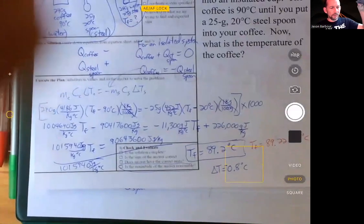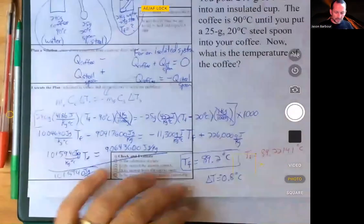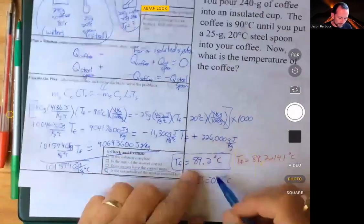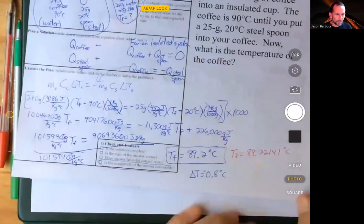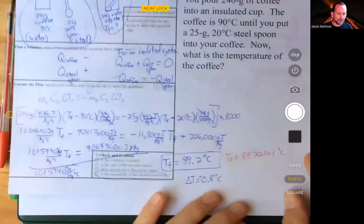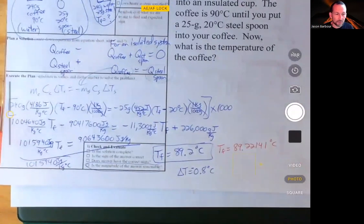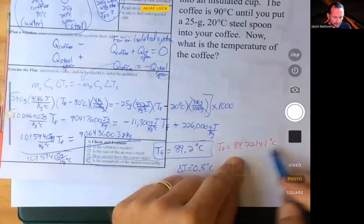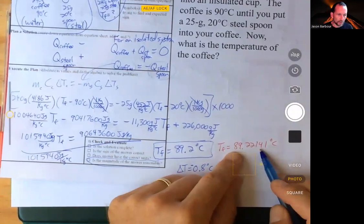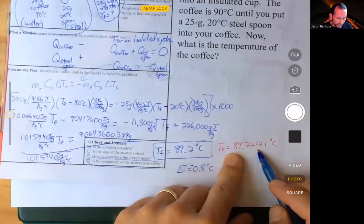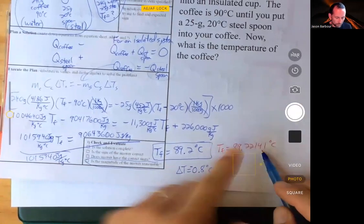I wrote down the final answer to example one as 89.2, which was correct. I had three sig figs. But if I want the energy calculations that I did last time to work out, I'm going to need more digits. So I just wrote down a whole bunch more. For my calculator, 89.22141.